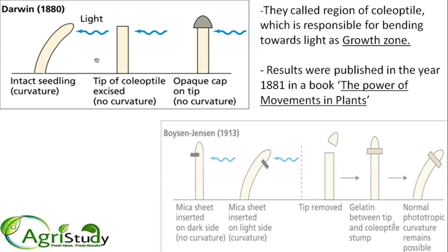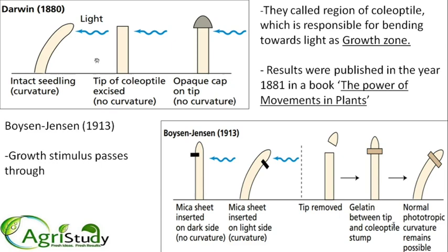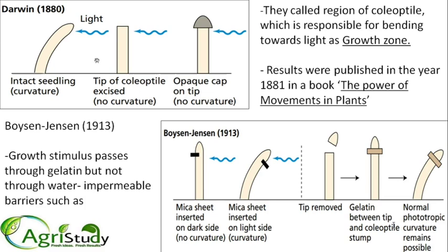Next, there is another scientist — Boysen-Jensen in 1913. They worked on oats. What they did is they exposed a blue light but inserted a mica sheet, which does not allow the movement of auxin. Because auxin cannot accumulate on the dark side through the mica barrier, there is no increase in auxin content in the coleoptile region, and thus bending does not take place. However, if the mica is placed on the light side, inactivation already occurs there and accumulation increases on the dark side, so the plant does bend towards light.